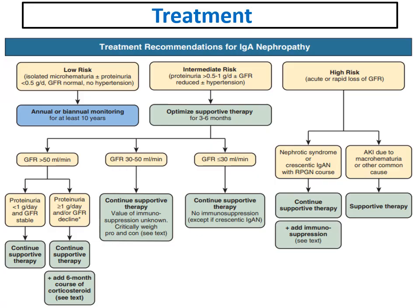For treatment of IgA nephropathy, patients are classified into low risk, intermediate risk, and high risk. Low-risk patients have microscopic hematuria, proteinuria less than 0.5 gram, normal GFR, and no hypertension. For low-risk patients, annual or biannual monitoring for at least 10 years is recommended, as they are at low risk for progression.